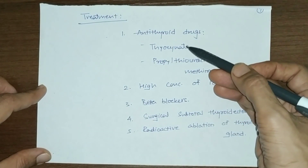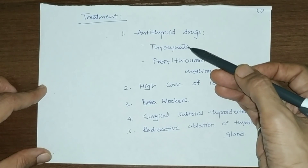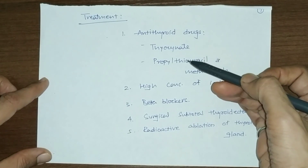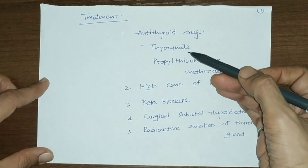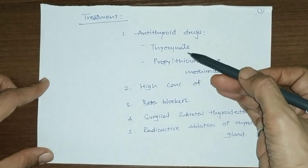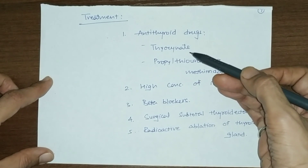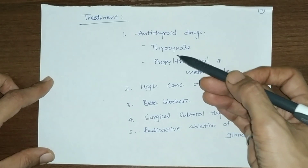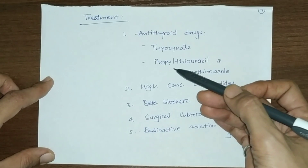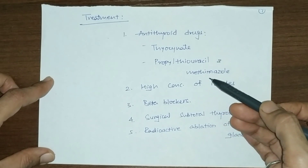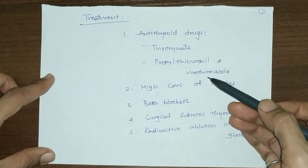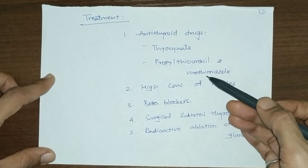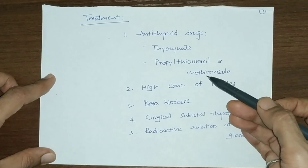Treatment modalities include antithyroid drugs, which block iodination of tyrosine and thereby decrease synthesis of thyroid hormones. Thiocyanates inhibit iodide trapping by the thyroid gland via competitive inhibition. Propylthiouracil and methimazole inhibit oxidation of iodide into iodine and also inhibit coupling of iodothyrosine to form T3 and T4.